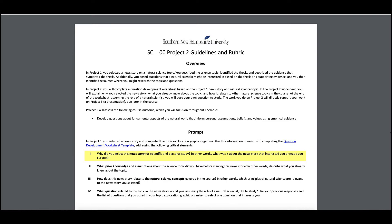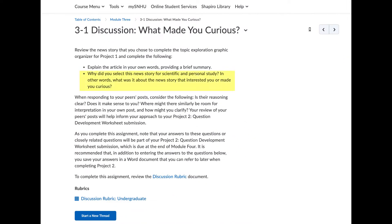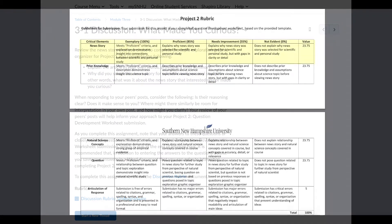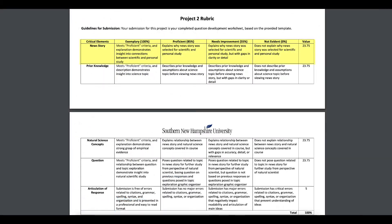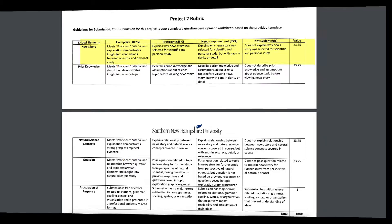The first prompt asks that you discuss the reasons why you selected your news story back in Week 1. This is directly related to our discussion prompt for the 3-1 discussion in Module 3. With the rubric containing an exemplary level of achievement, consider what details you can add to your original posts from the 3-1 discussion to ensure both scientific and personal reasons are clearly specified.